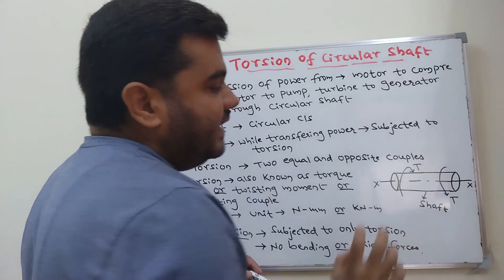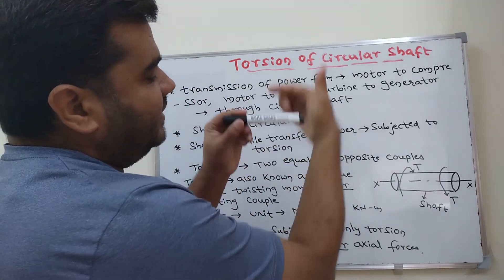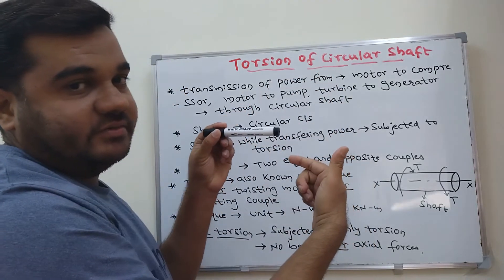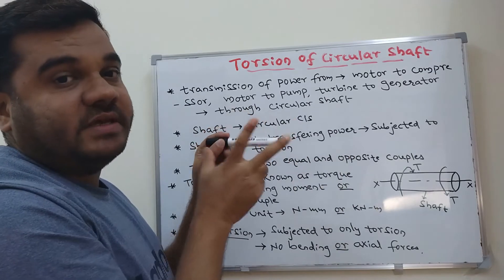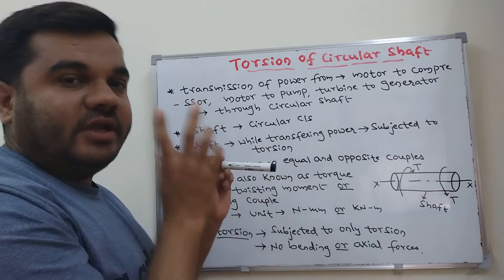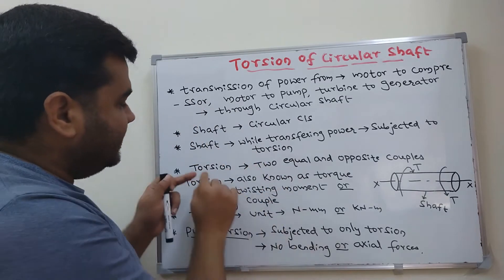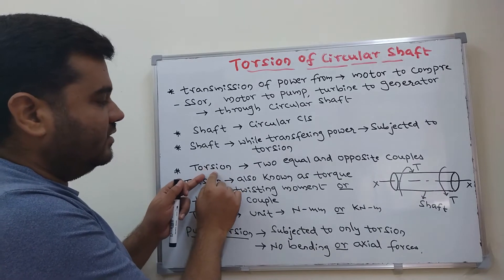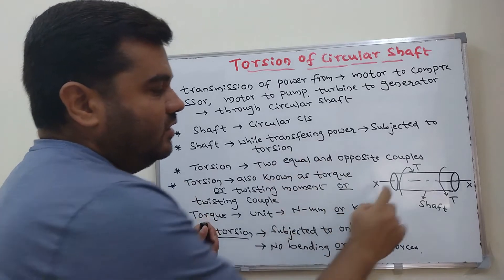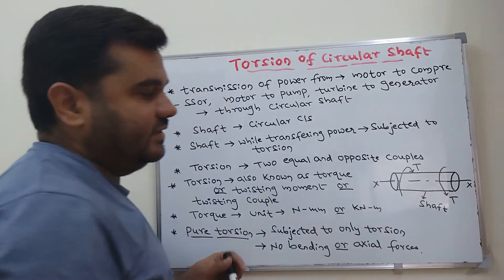You should not apply both forces in the same direction. If you apply a couple in one direction at one end, you must apply it in the opposite direction at the other end. These two forces form a couple. The couple must be equal in magnitude and opposite in direction — that is called torsion. Here T is shown at both ends, equal in magnitude, opposite in direction.